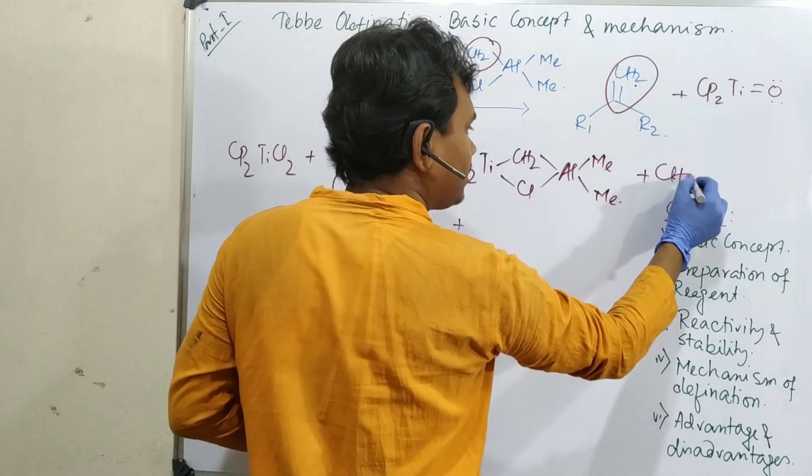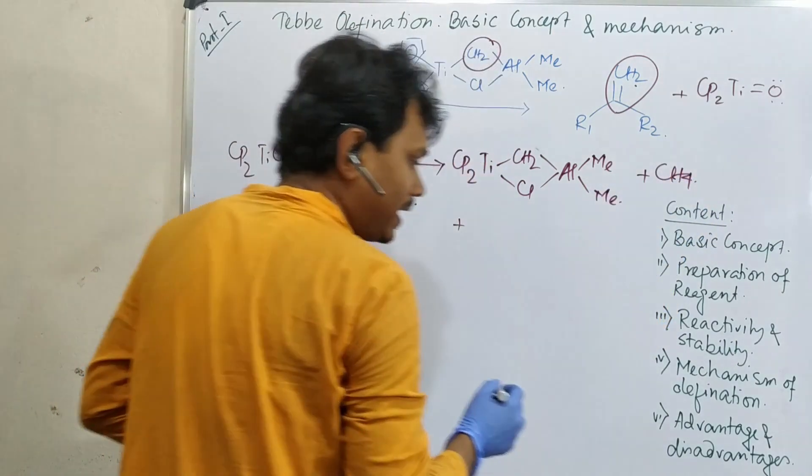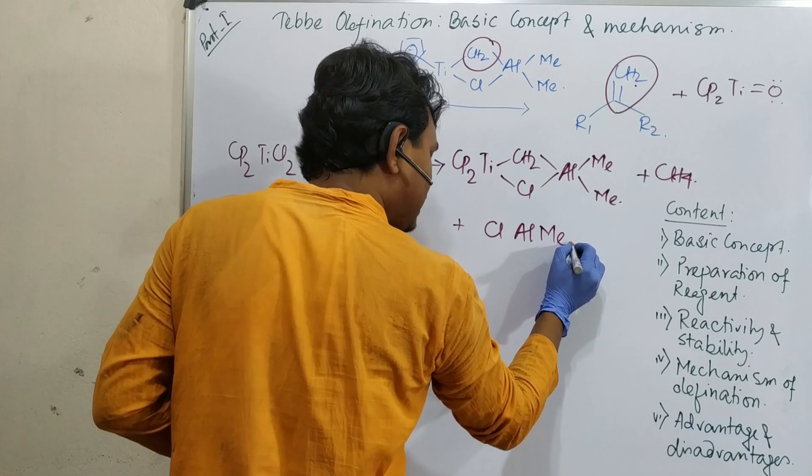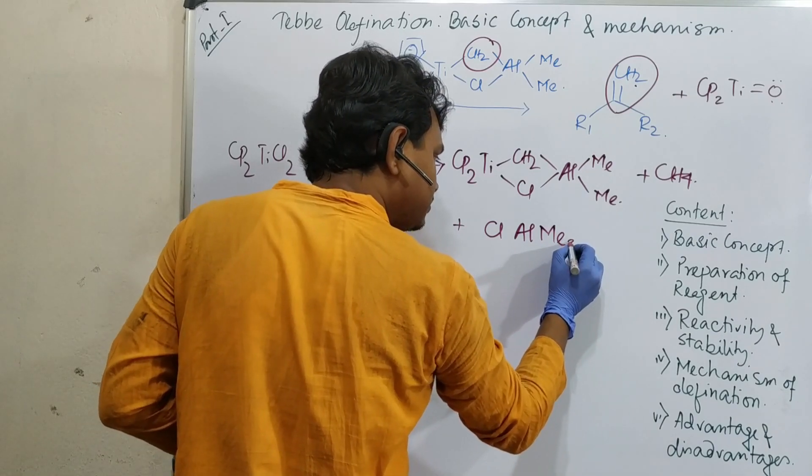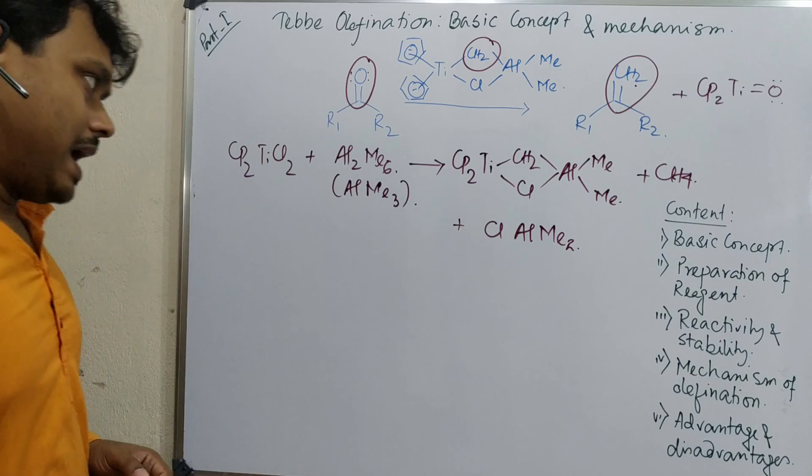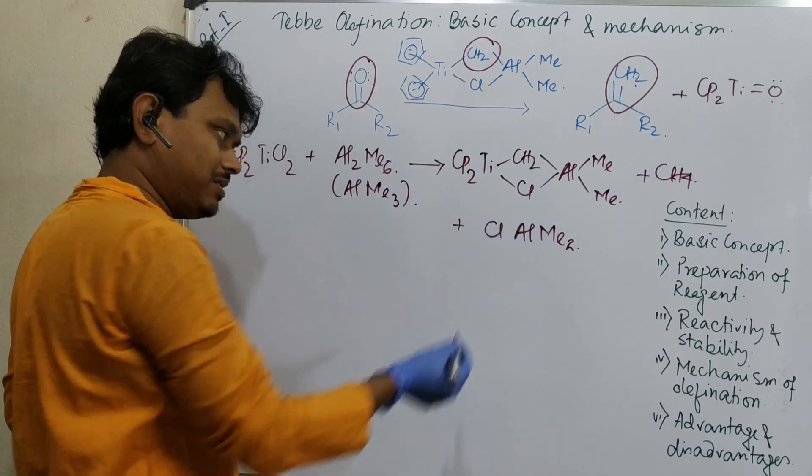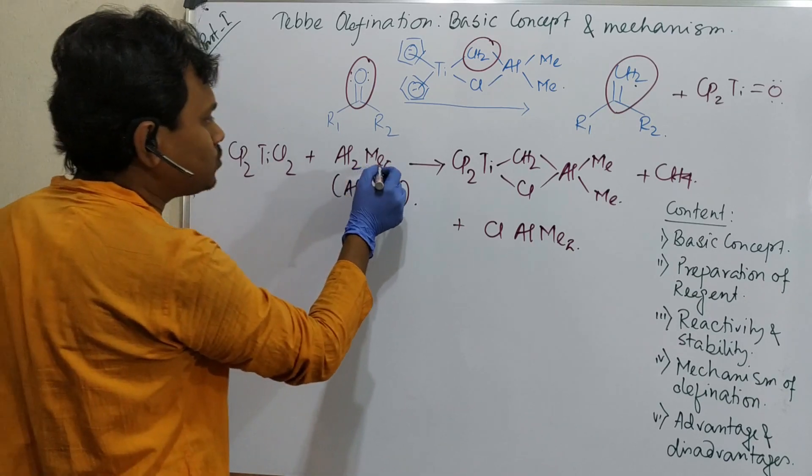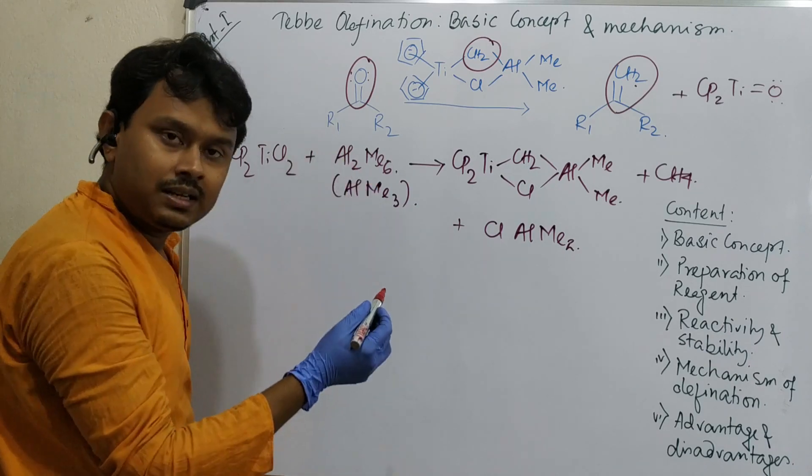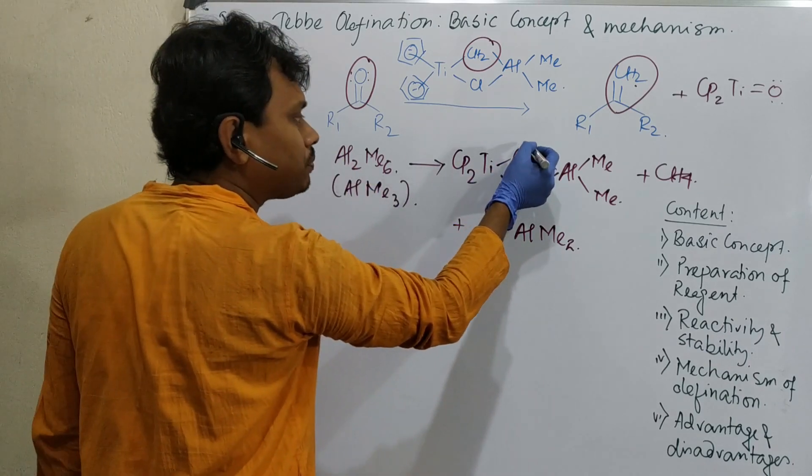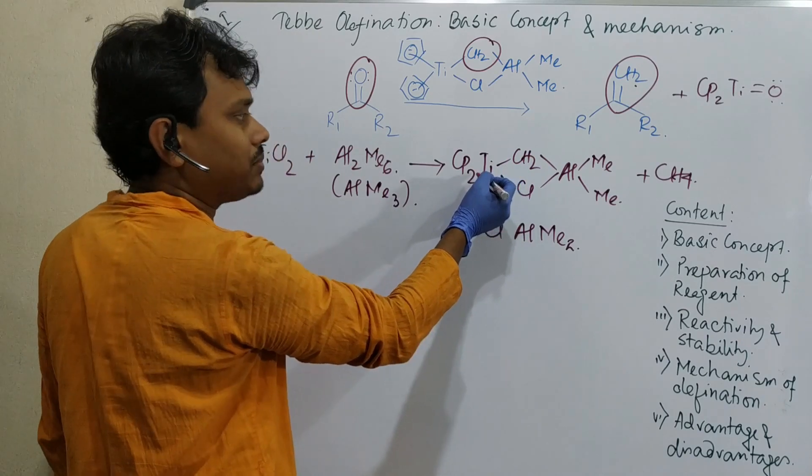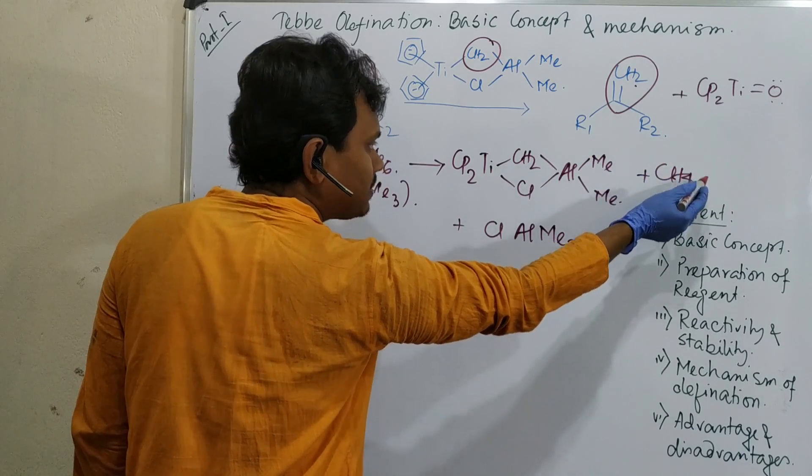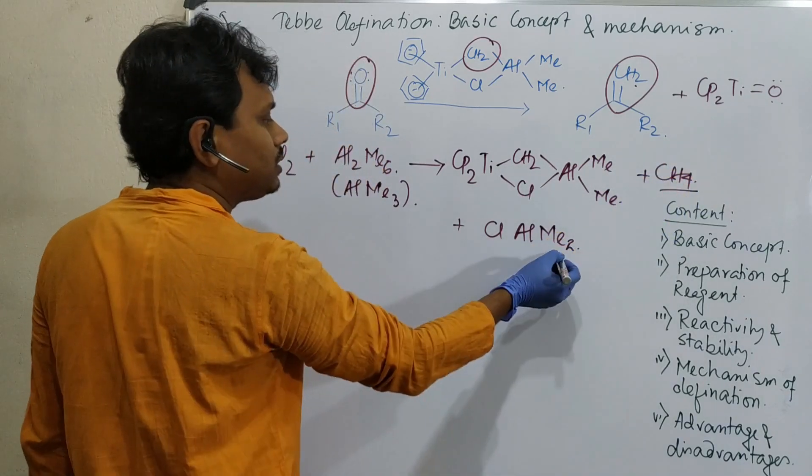It's a dimer, means AlMe3. This reacts with this TiCl2 and ultimately results in this reagent, that is Cp2TiCH2Cl breached with aluminum trimethyl. Plus another thing, plus methane, I shall explain why this methane, and chloroaluminum dimethyl, and this is also a dimer because this chloroaluminum dimer.